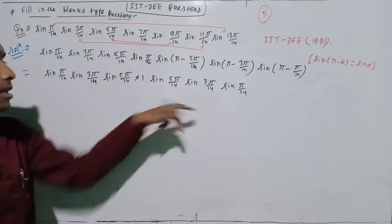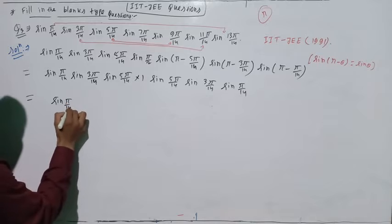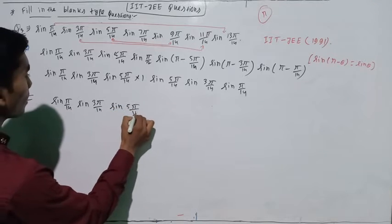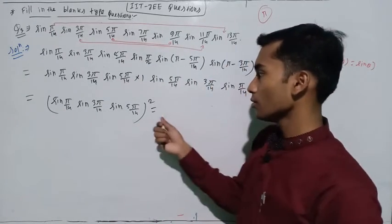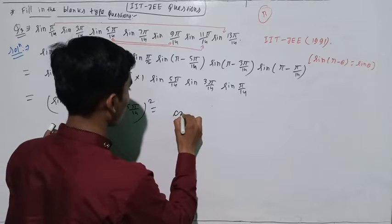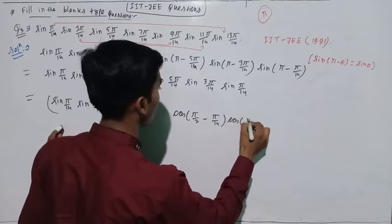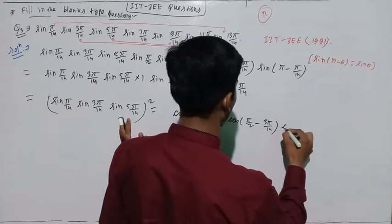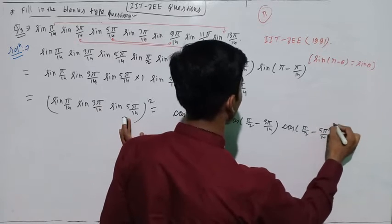Now look at these terms — you will find all these three terms are occurring two times. So you may write it as sin of pi by 14, sin of 3 pi by 14, sin of 5 pi by 14 to the power 2. Now after this, you will have to convert it into cos. We will convert it into cos of pi by 2 minus pi by 14, cos of pi by 2 minus 3 pi by 14.